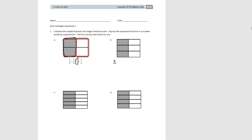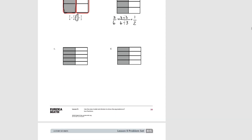In B we started with six pieces and three of them are shaded, then we ended up with two pieces, one shaded. So for three sixths to end up as one half, we divide the denominator by three and the numerator by three, and we show that we've ended up again with one half shaded. Try C. For C we originally had the whole divided up into ten pieces and five of them were shaded. To compose that into larger units, we can divide ten by five and five by five, and we end up with one half. We see that the larger unit of a half is shaded.